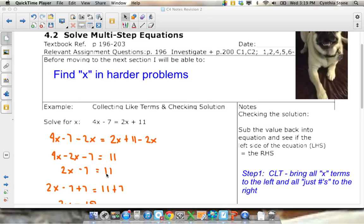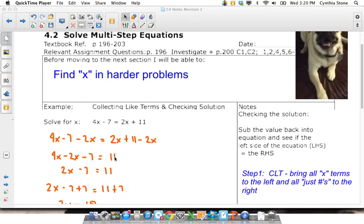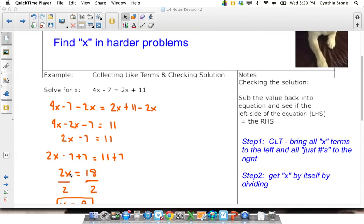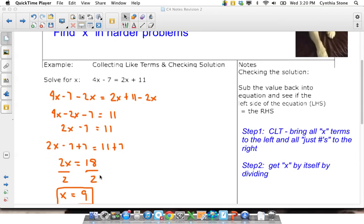Next step, I got to get this minus 7 to - the just numbers all go to the right side of the equation. So because it's minus, I'll use opposite operation and add it. That's why it's added here and I add it to both sides. That leaves me with 2x on the left hand side because minus 7 plus 7 is 0, and 18 over here. Last step, divide both sides by 2 and I end up with x equals 9.